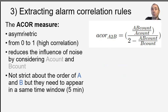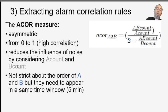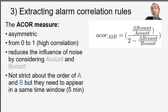To solve this problem we designed a measure called ACOR — the Alarm Correlation Rule measure. It is asymmetric, ranges from zero to one, where one means high correlation and zero means low correlation. It reduces the influence of noise by considering the number of times A appears and the number of times B appears. It is not very strict about the order of A and B because we have noisy timestamps — we consider A and B to appear together if they occur within the same time window of about five minutes, based on the recommendation of experts.